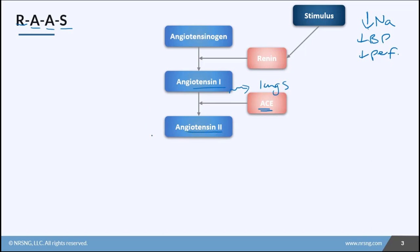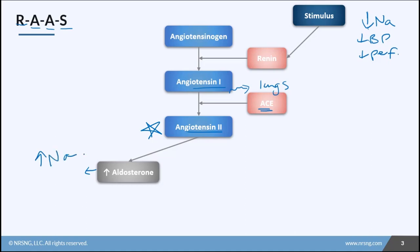ACE converts angiotensin-1 into angiotensin-2. Angiotensin-2 is what does all of the work here — it is our powerhouse. Let's look at the four main things that angiotensin-2 does. First, it causes the release of aldosterone. Aldosterone goes to the kidneys and causes increased reabsorption of sodium back into the blood, so it's retaining sodium.